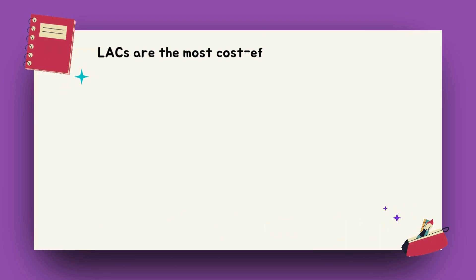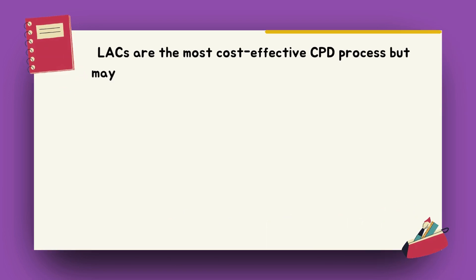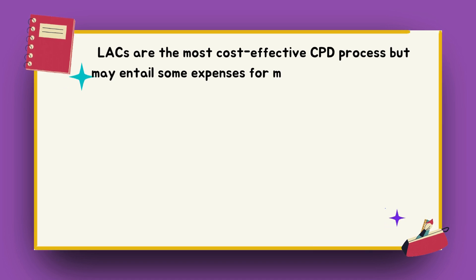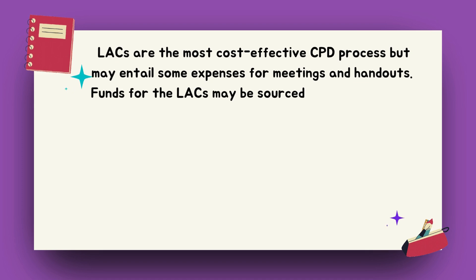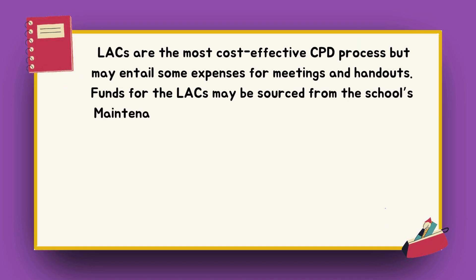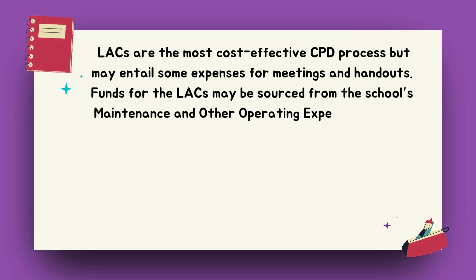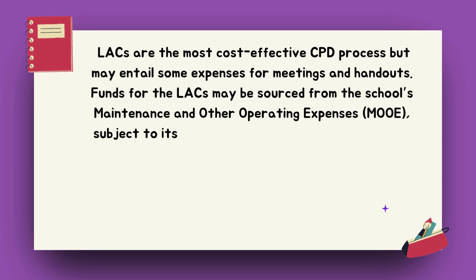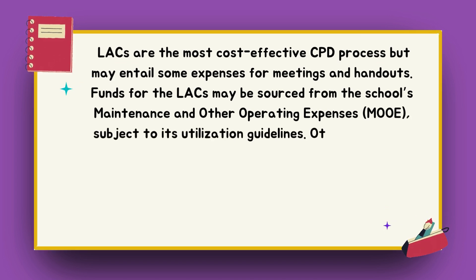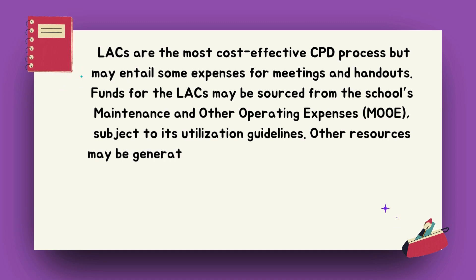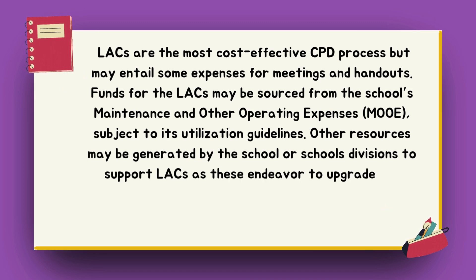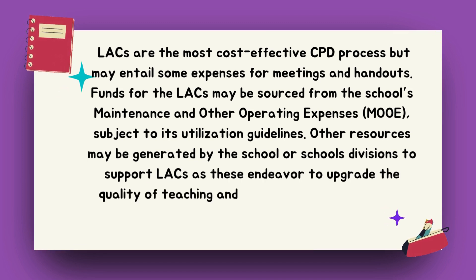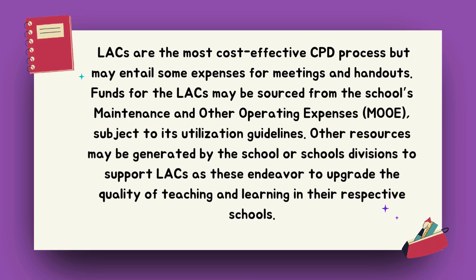Learning Action Cells are the most cost-effective CPD process, but may entail some expenses for meetings and handouts. Funds for the Learning Action Cells may be sourced from the school's Maintenance and Other Operating Expenses (MOE), subject to its utilization guidelines. Other resources may be generated by the school or school's divisions to support Learning Action Cells as they endeavor to upgrade the quality of teaching and learning in their respective schools.